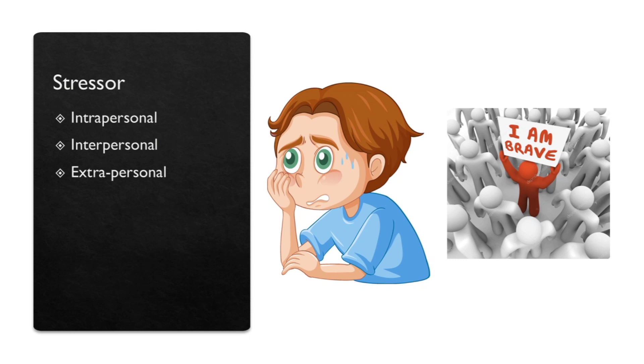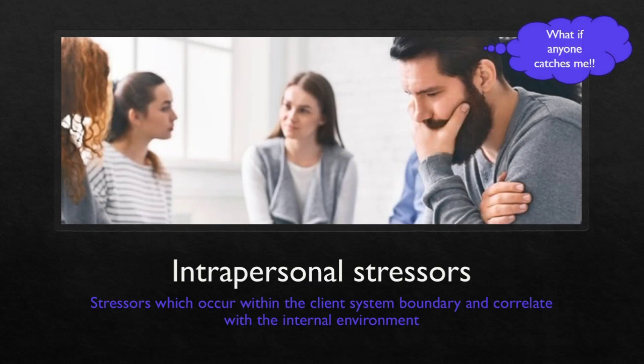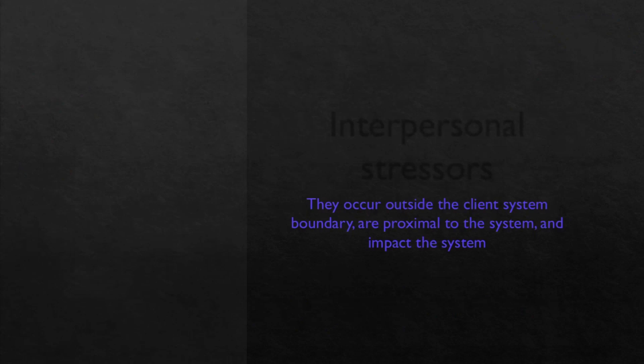Stressors can be of three different types: intrapersonal, interpersonal, and extra-personal. Intrapersonal stressors are those that occur within the client's system boundary and correlate with the internal environment. For example, I have done something wrong but nobody knows about it. Everyone is being perfectly fine to me, but still in my mind I am continuously thinking about that and being stressed up. This is correlating with my internal environment — I am disturbed, that is why I am stressed. That is an intrapersonal stressor.